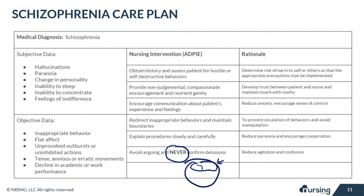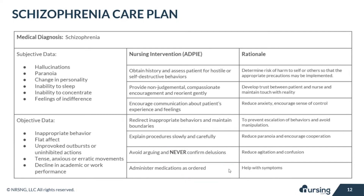Work to reduce agitation and confusion. These patients need therapeutic communication to keep their mind on the right path. Administer medications as ordered, such as antipsychotics, to help reduce symptoms.